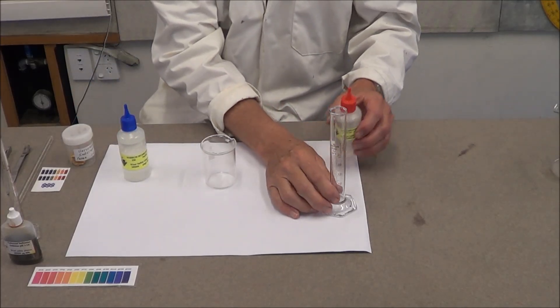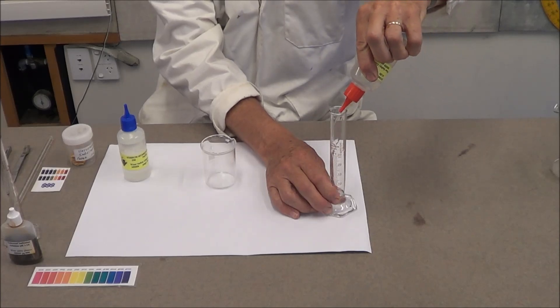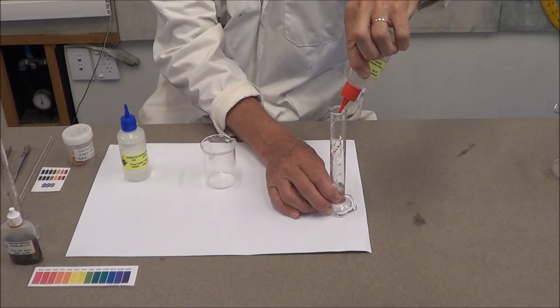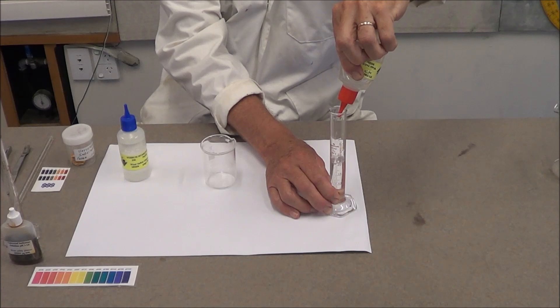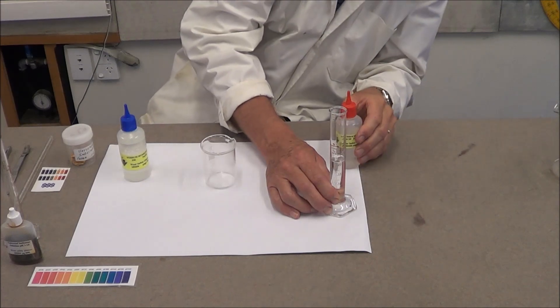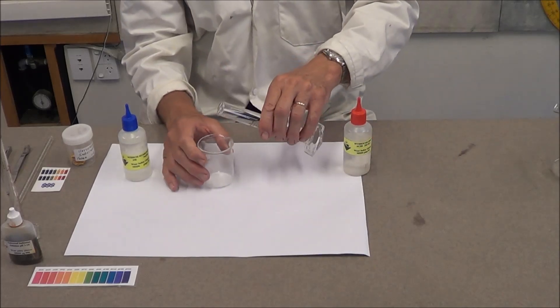First, measure 20 mL of 2 moles per litre hydrochloric acid, ensuring that the meniscus is sitting on the 20 mL mark. Pour this into your beaker.